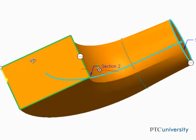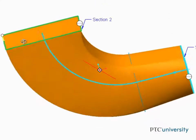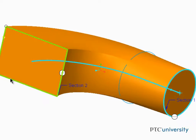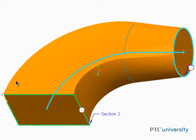Creo Parametric displays the preview of the feature, a blend between a circle and a rectangle, all along the selected trajectory.